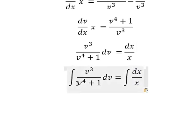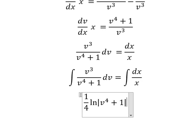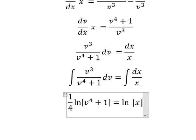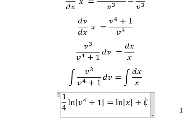So the integral of this one is 1 over 4 ln of the absolute value of v to the power of 4 plus 1. The next one: ln of the absolute value of x, and I will put c.